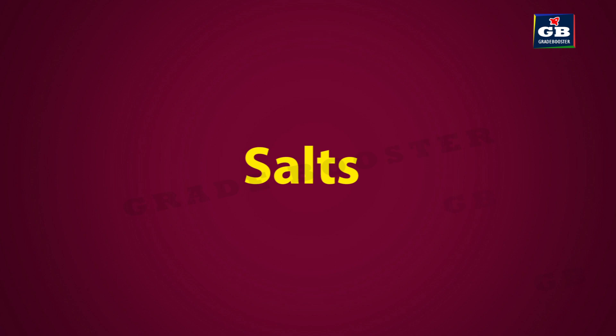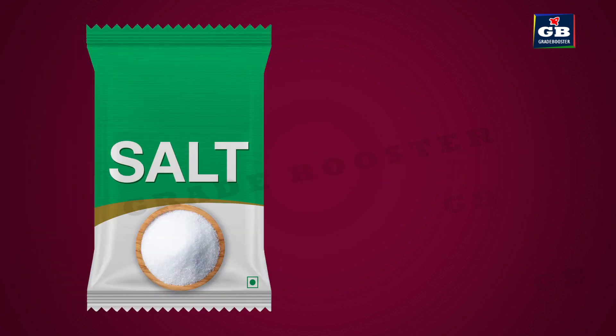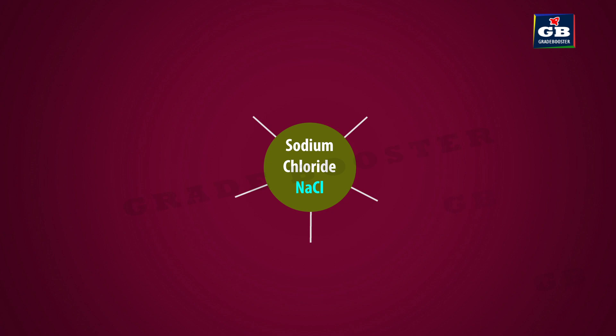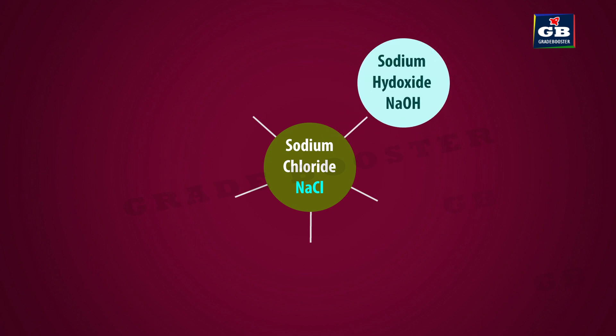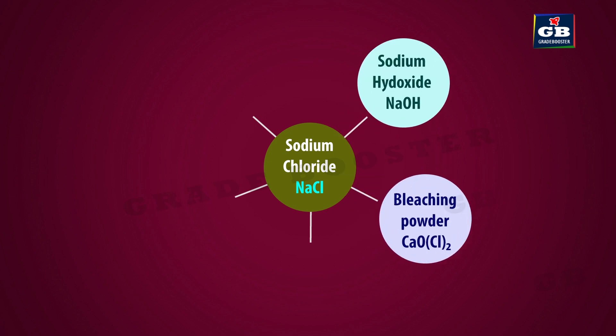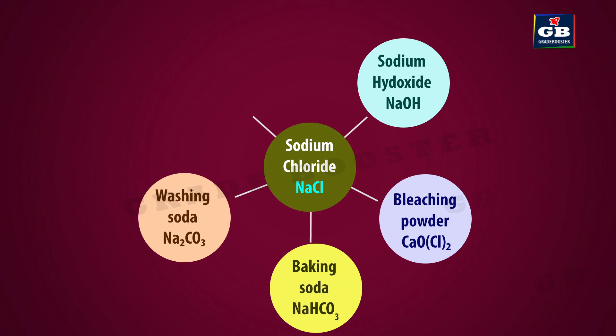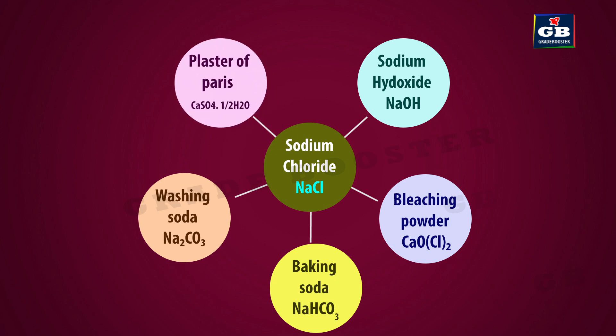The chemical name of common salt used in our house is sodium chloride. It is the raw material to make many chemicals in industries. Chemicals made from common salt include sodium hydroxide, bleaching powder, baking soda, washing soda, and plaster of paris.